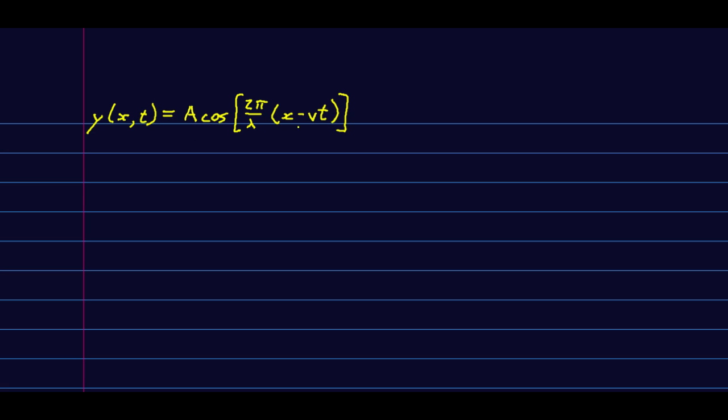This form is fine, it'll always work for us, but sometimes you don't know, say, the speed. So, when that's true, you can use the fact that v is lambda over the period, or lambda f. And you could just replace that in there. So then you get...